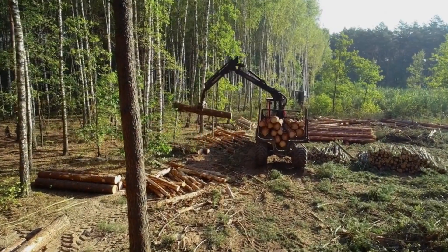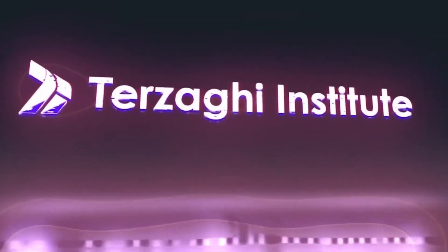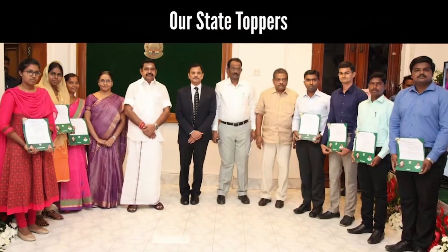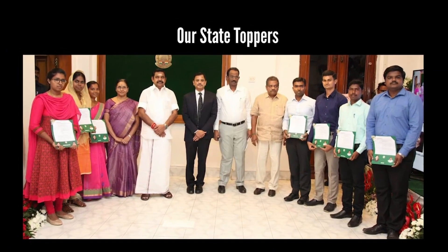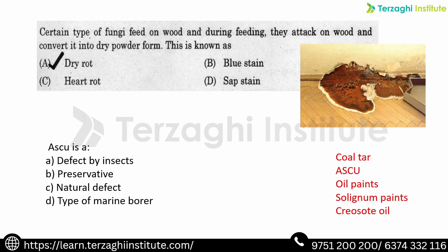Hey Aspirants, welcome to Tevahi Institute. Now we are going to talk about the concept: What is Timber? First question: a type of fungi feeds on wood. During feeding, they attack the wood and convert it to dry powder form. This is known as dry rot. If we look at wooden doors and windows, this powder form is dry rot. A fungal attack can also cause wet rot.